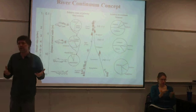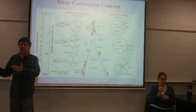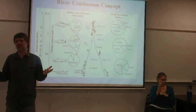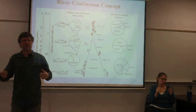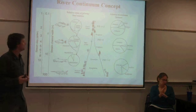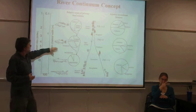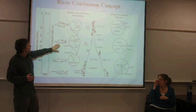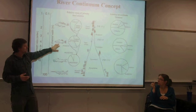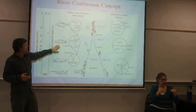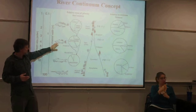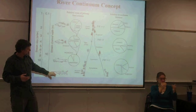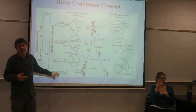Things like creek chubs in smaller streams, or small trout in the Rockies or on the East Coast, are using the terrestrial insect. As we move down, we get larger fish — some predatory fish, often sight feeders. And then as we move further, we get things like catfish and paddlefish.